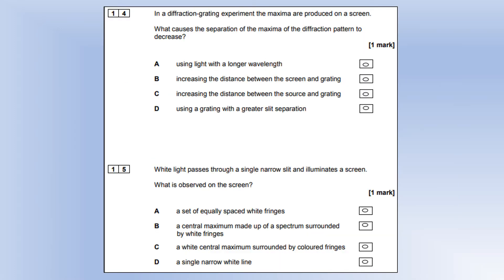In a diffraction grating experiment, what causes the separation of the maxima to decrease? A longer wavelength has a larger angle of diffraction. Increasing the distance between screen and grating, if you have a fixed angle and make the distance bigger, that makes them spread wider. Increasing the distance between source and grating has no effect at all. But using a greater separation between slits does bring the fringes together. You can see this using the diffraction grating equation n lambda equals d sine theta.